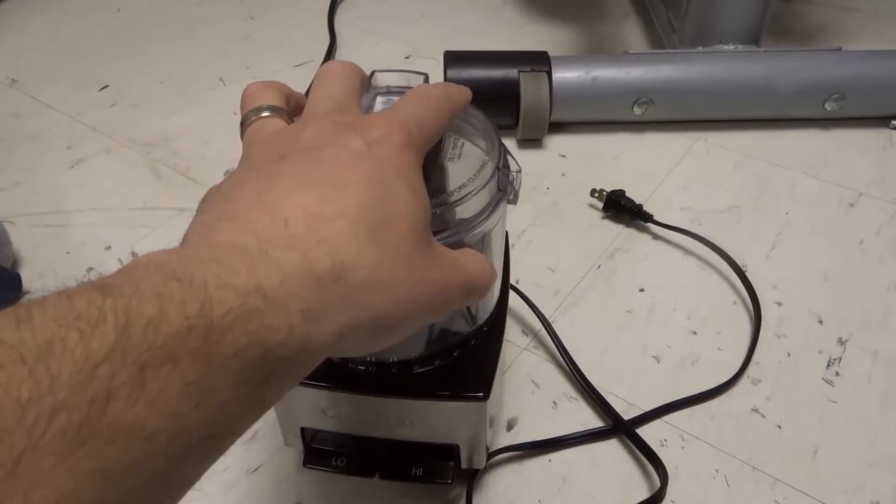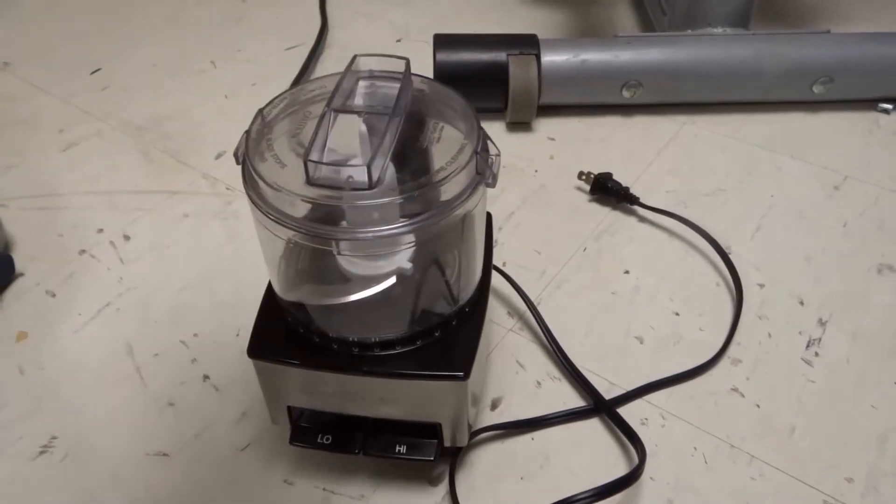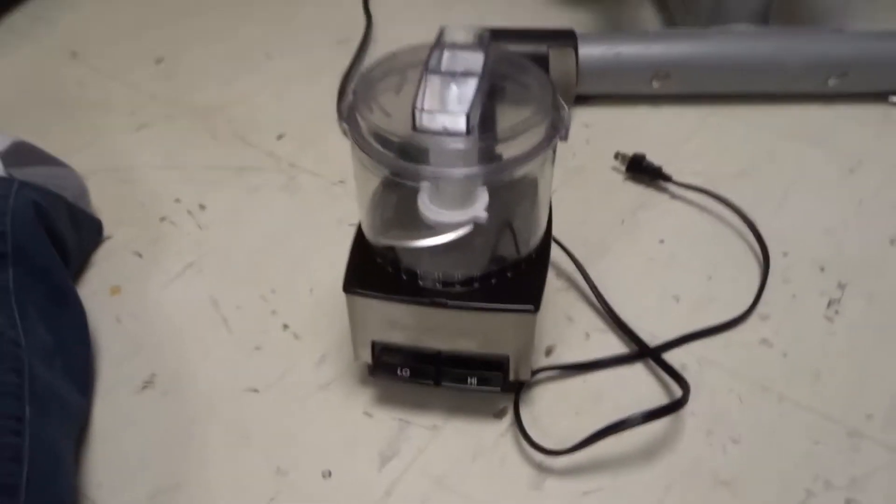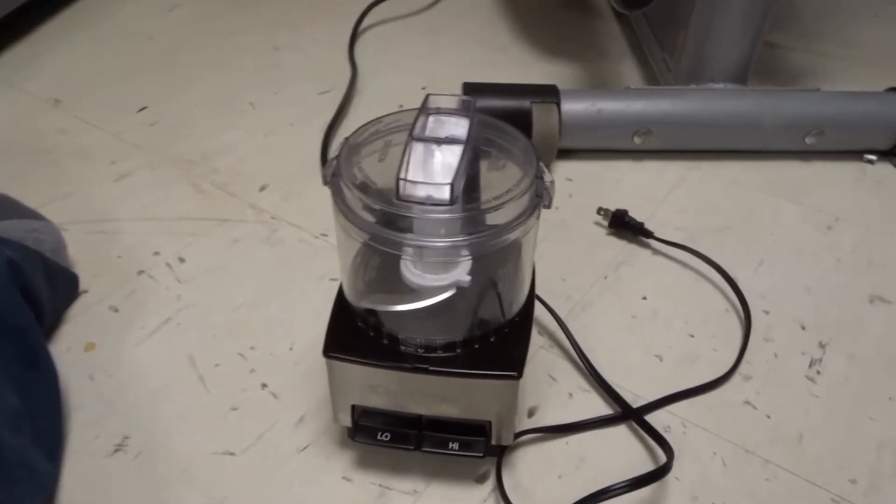As you can see right here, this is the Cuisinart Food Processor that goes by the name of the Mini Prep. It is a relatively small food processor, and it's absolutely fantastic and easy to use.